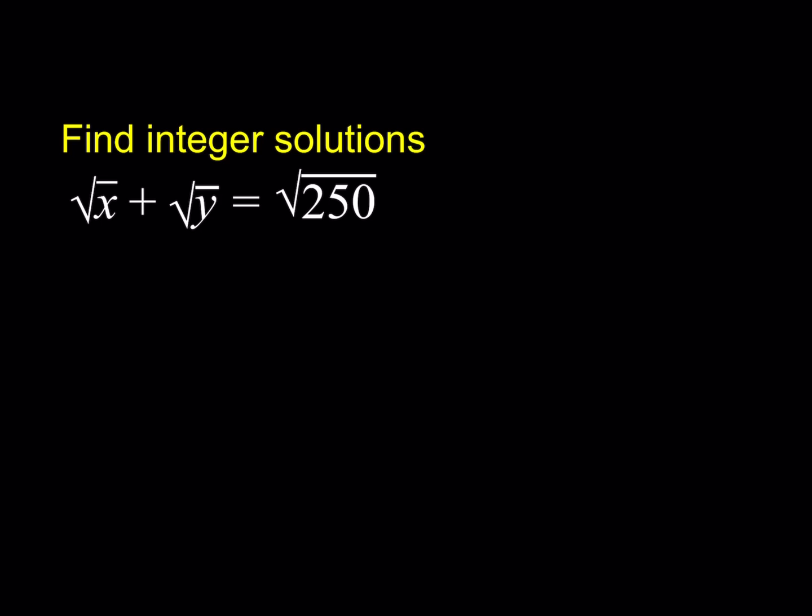Now we're going to be looking for integer solutions here. x and y are integers and we're going to be solving these equations. So what are we supposed to do? I'm going to introduce two methods here. The first method involves the isolation of one of the variables.